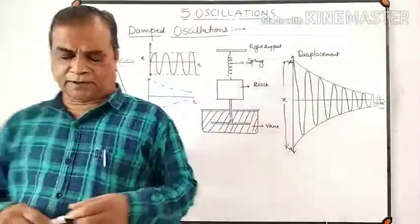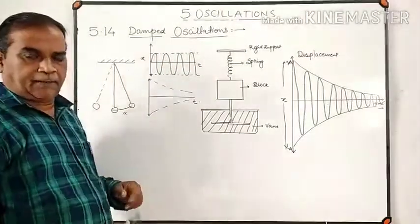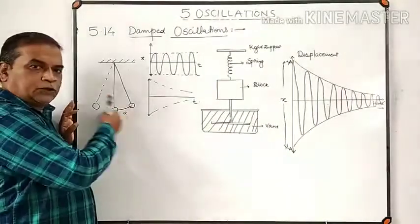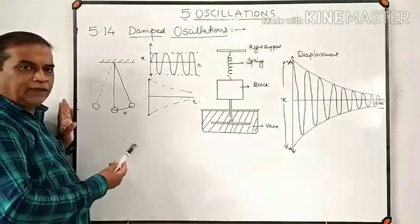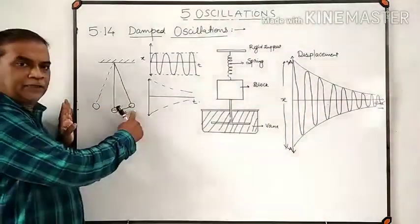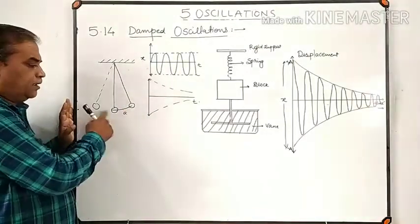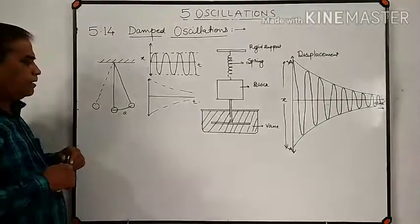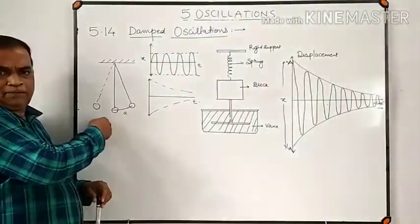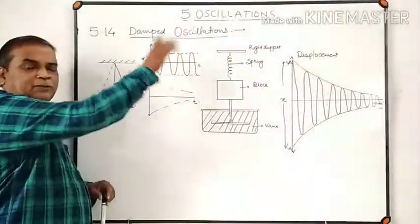Today we will study what is the meaning of damped oscillation. As far as the motion of a simple pendulum is concerned, when a pendulum is taken to one of its extreme positions and released, it will perform oscillation about its mean position. During the oscillation of a pendulum, we can observe how the displacement of the bob varies with respect to time.